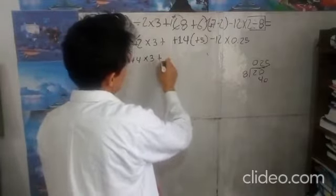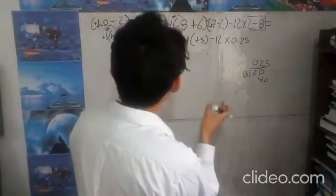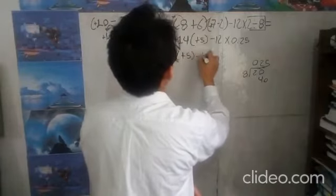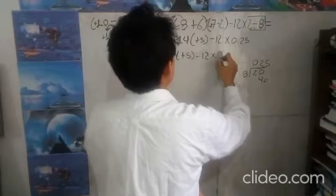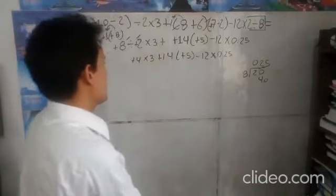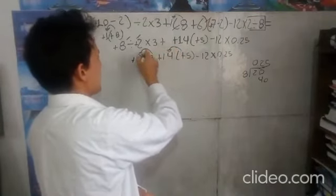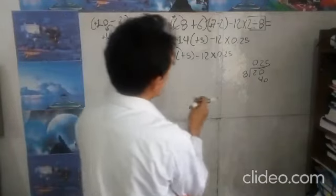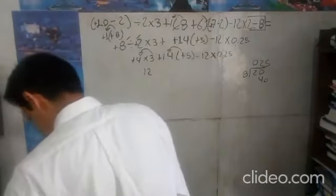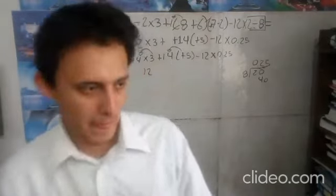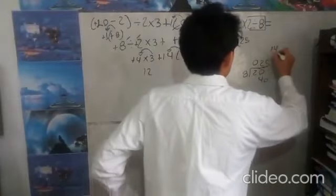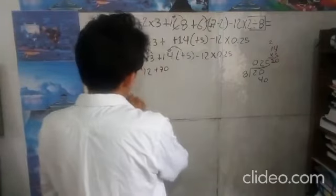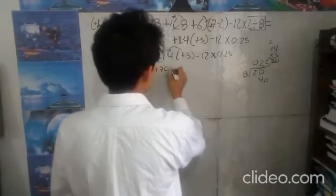Más, aquí tenemos: más 14, por más 5, menos 12 por 0.25. Ahora sí podemos proceder. Esto lo multiplicamos por quien está antes, eso es lo que me indica la multiplicación, o el paréntesis. 4 por 3 es a 12. Y 14 por 5: 5 por 4 es 20, 5 por 10 es 50, 70. Más 70. Y 4 por 3 es a 12. Menos por más es a menos, y 12 por 0.25.